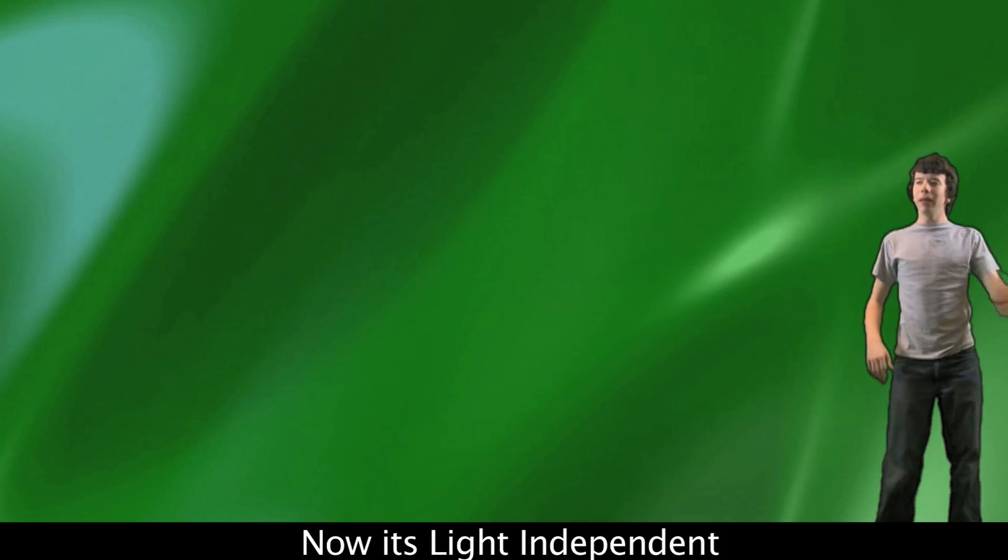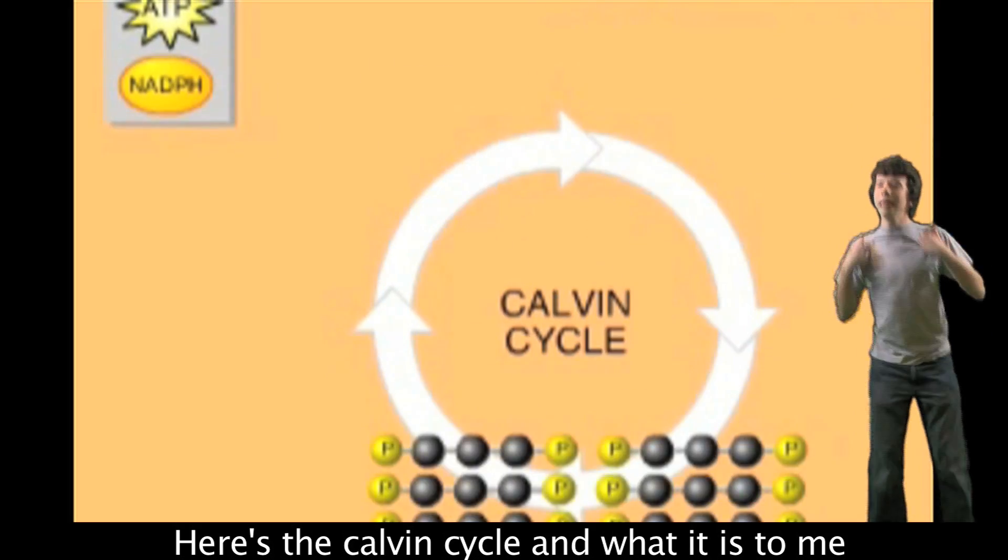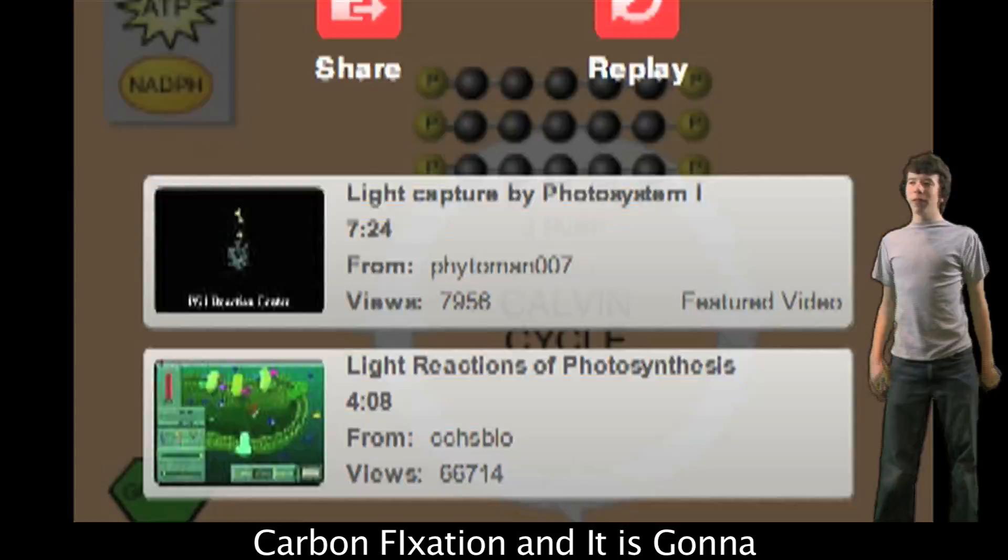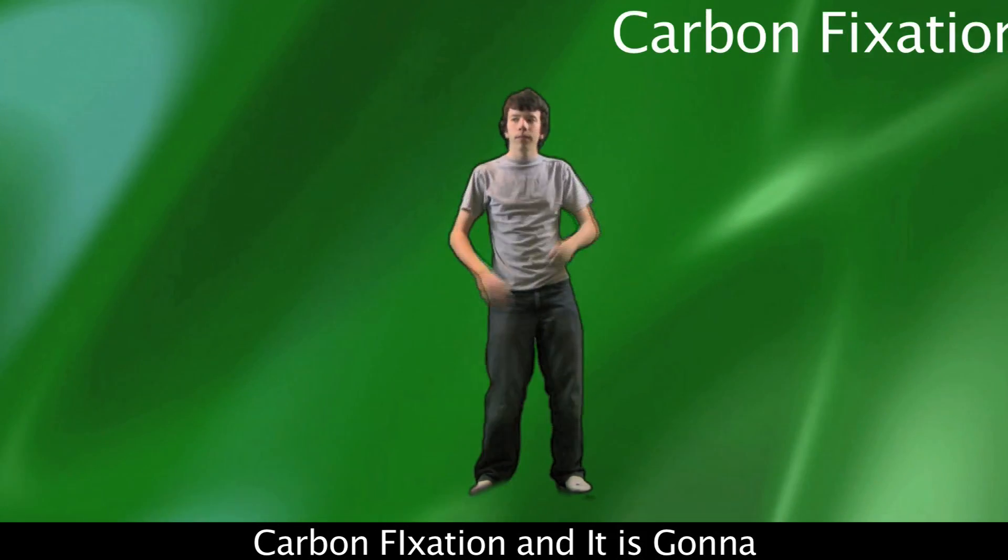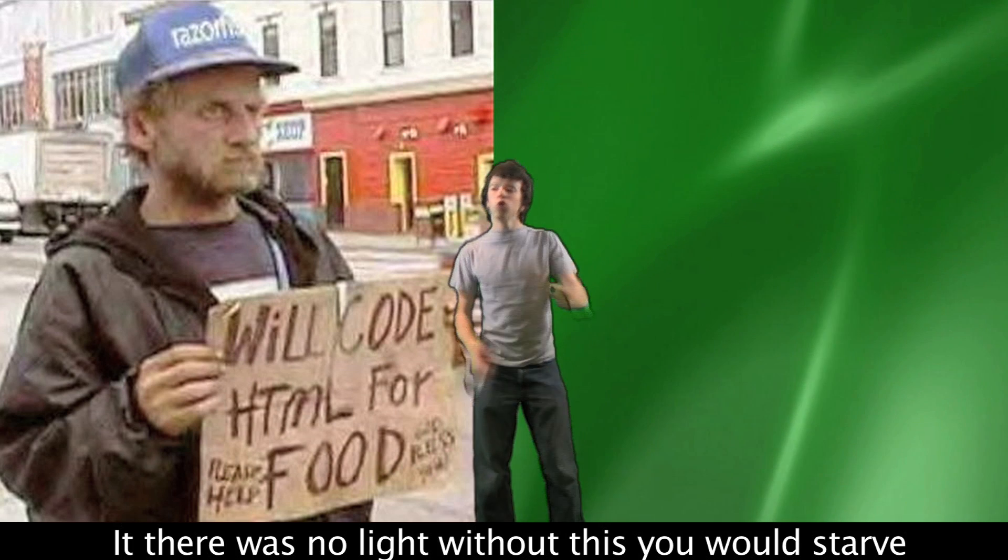Now it's light independent. Here's the Calvin cycle and what it is to me. Got CO2, deformed sugar growth up in the stroma. Carbon fixation, and it is gonna use PGAL to make sugars and carbs. If there was no light without this, you would starve.